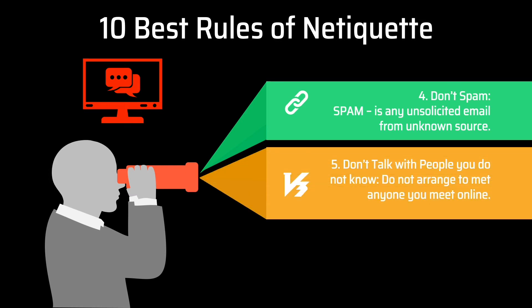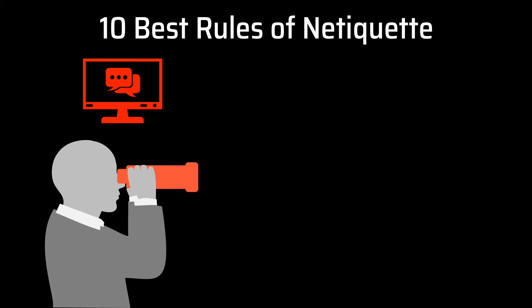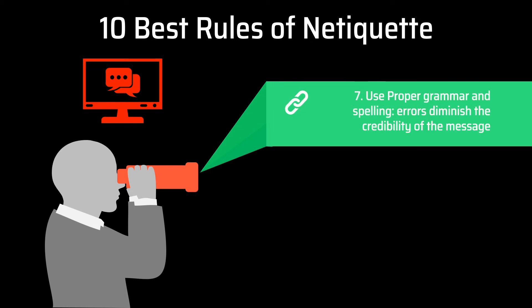Number five, don't talk with people you do not know. Do not arrange to meet anyone you meet online. Number six, obey copyright laws — don't steal someone else's idea, property, and rights. Number seven, use proper grammar and spelling, as errors diminish the credibility of the message.